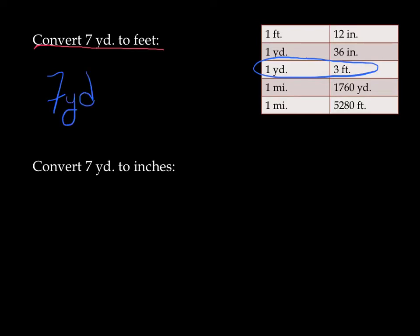7 yards, if we multiply this by 3 feet over 1 yard, this will work out for us. Now, how do I know this is going to work out? Well, look at the units. I'm multiplying by yards, and I'm dividing by yards. Well, that's equivalent to the number 1. In other words, we can cancel that out. And the result is that the only unit that's left is feet. So now we just do 3 times 7, which gives us 21 feet.